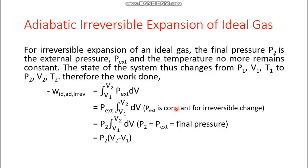Now let us find out some alternate expression of work done by the system. We shall derive it first for the irreversible change, by the same manner we did the derivation in case of isothermal expansion of ideal gas. In the suffix we have written 'id ad irib': id means ideal gas, ad means adiabatic, and irib means irreversible; the minus sign indicates work done by the system. Starting as usual: integration from v1 to v2 of p_external dv. This is constant for irreversible expansion and is equal to p2, giving p2 into integration from v1 to v2 of dv, and finally we get the expression p2 into (v2 minus v1).